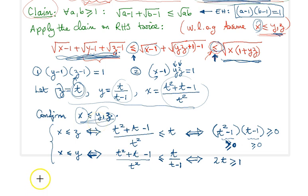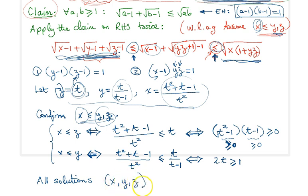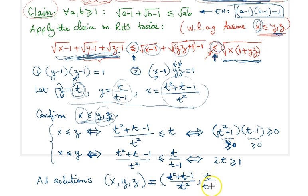All solutions are permutations of the following: x = (T² + T + 1)/T², y = T/(T−1), z = T, for T ≥ 1. That proves this problem. Hope to see you in our next video.